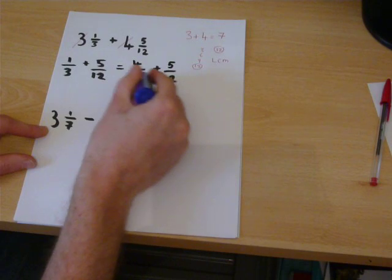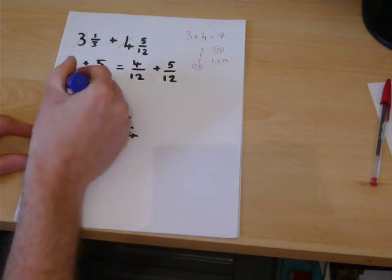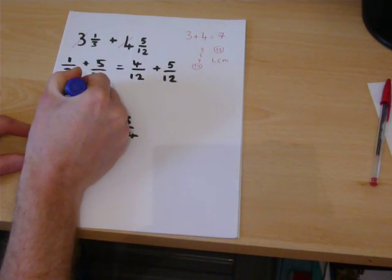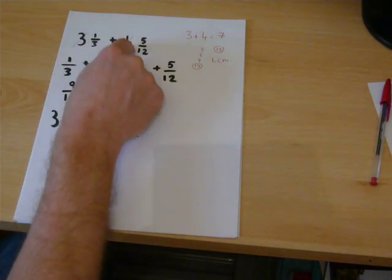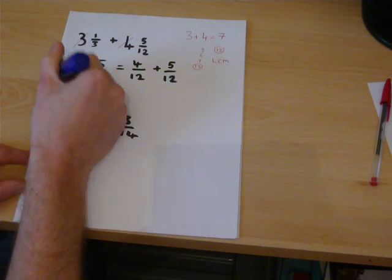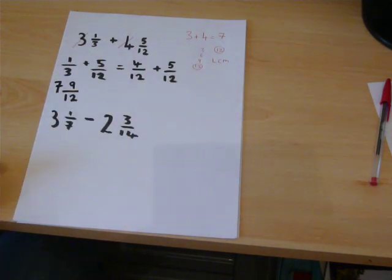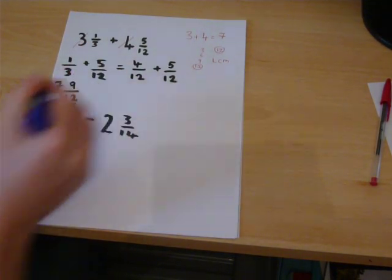So this part here. 4 plus 5. You get 9 twelfths. And then from before, the 3 and the 4 gave us 7. So we write it as 7 and 9 twelfths.